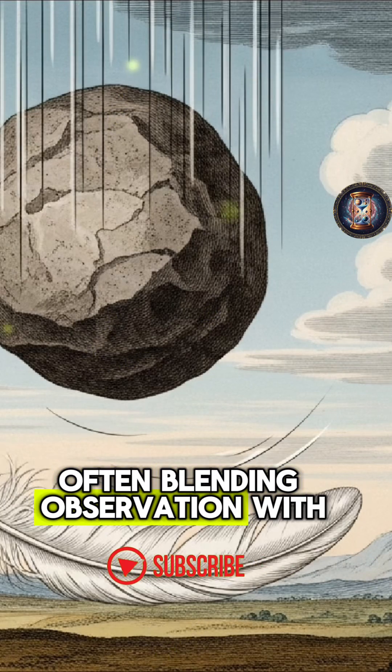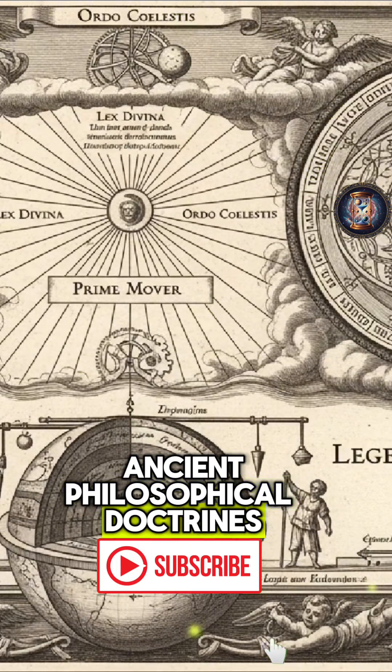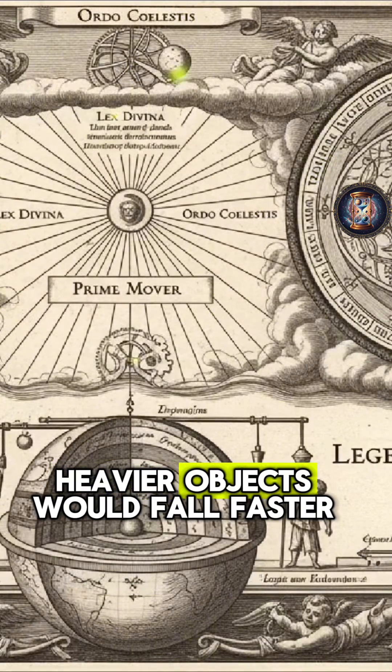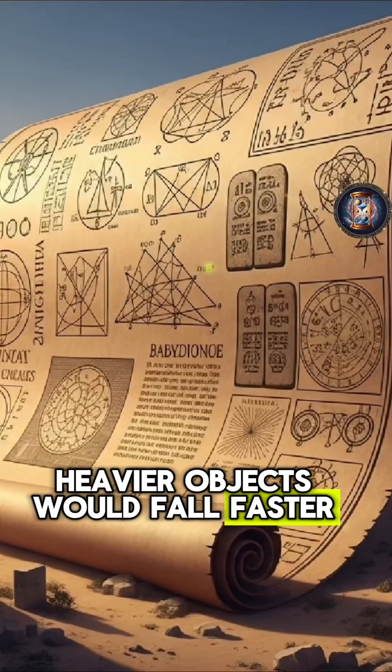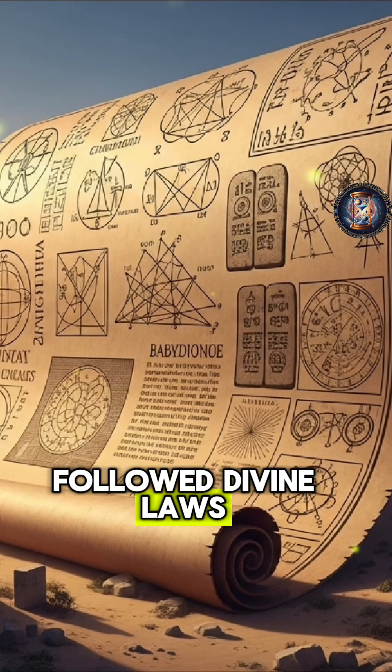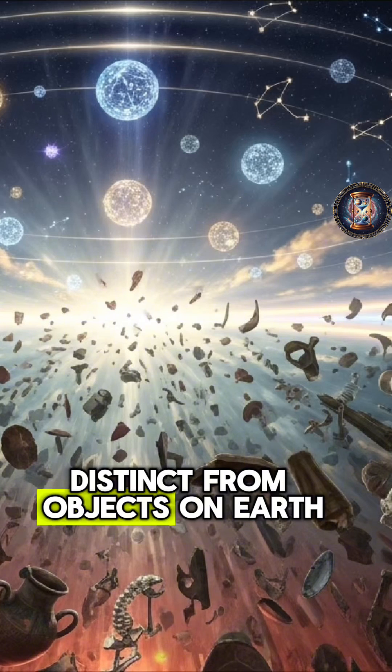Often blending observation with ancient philosophical doctrines, Aristotle once believed that heavier objects would fall faster and that celestial movements followed divine laws distinct from objects on Earth.